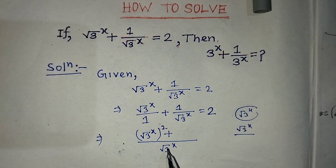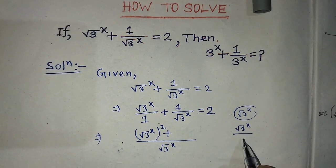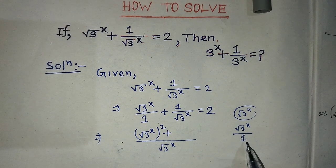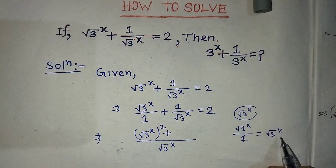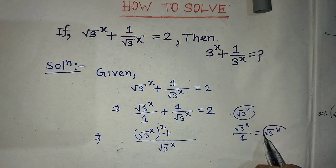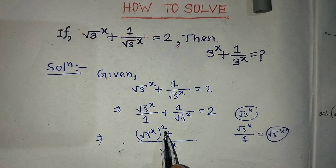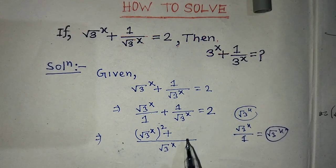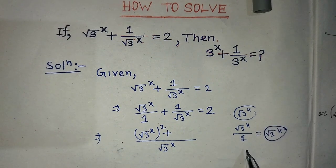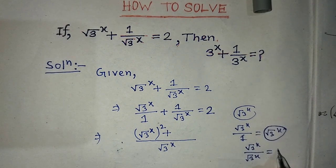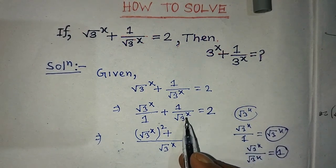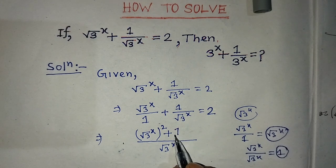Now we divide the LCM, root over of 3 whole to the power x, by the denominator of each fraction. Dividing root over of 3 whole to the power x by 1 gives root over of 3 whole to the power x, and we multiply that with root over of 3 whole to the power x, giving root over of 3 whole to the power x squared. For the second term, dividing root over of 3 whole to the power x by root over of 3 whole to the power x gives 1, and 1 multiplied by 1 is 1. So the numerator becomes root over of 3 whole to the power x, squared, plus 1.